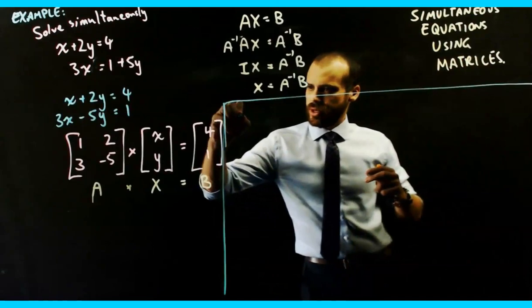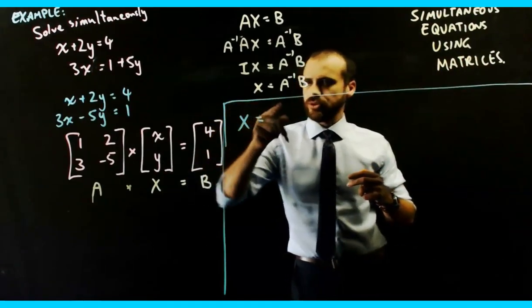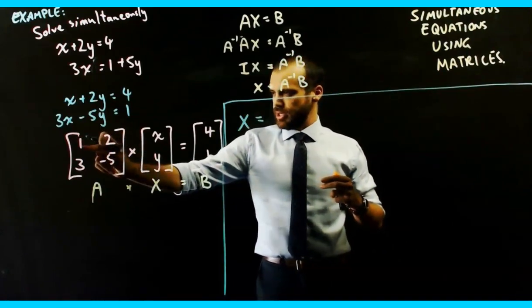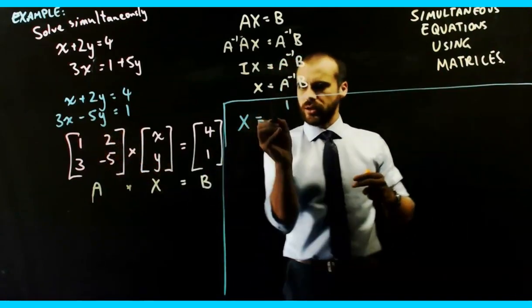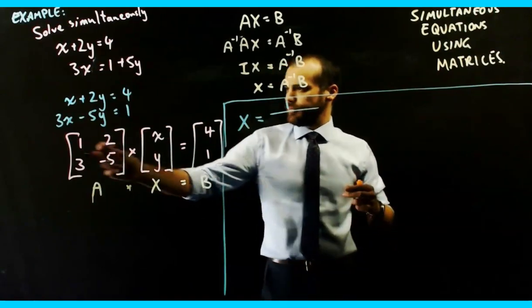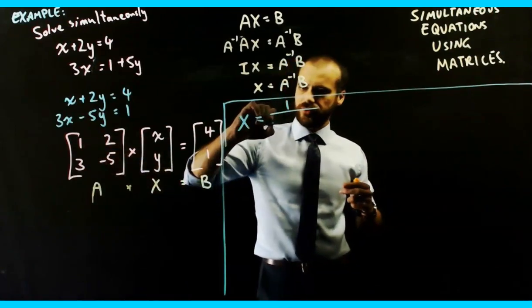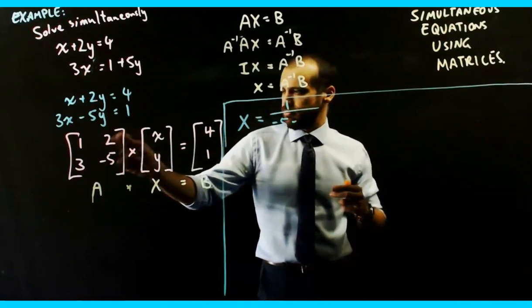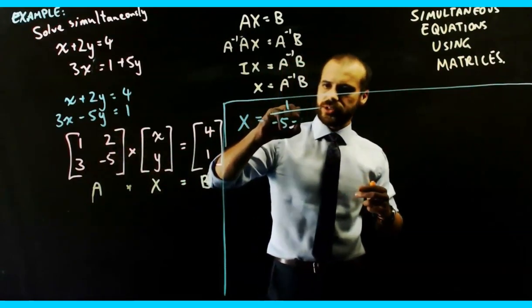So we know that x is going to be equal to the inverse of A. The inverse of A, I'm going to try to do it all in one step here, is going to be equal to 1 over 1 times negative 5, which is negative 5, minus B times C, 2 times 3, which is 6.